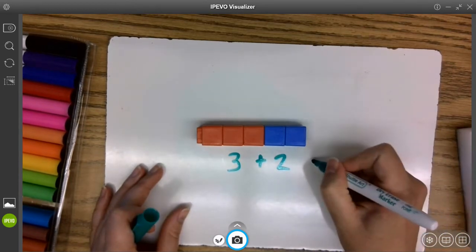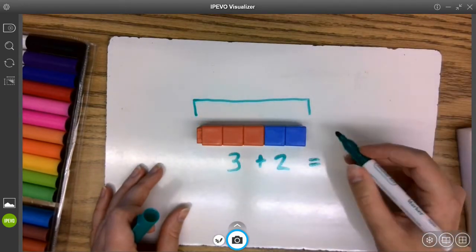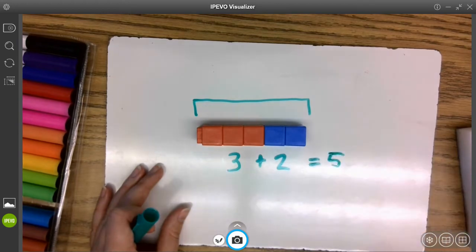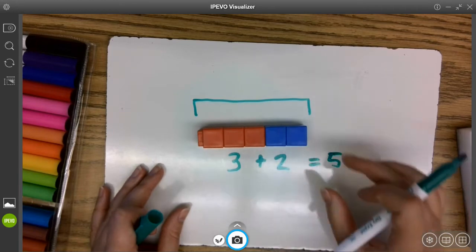How many cubes do I have all together? From beginning to end, I have five. I have three first and two second.